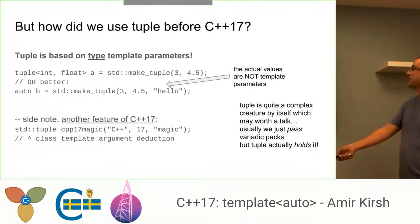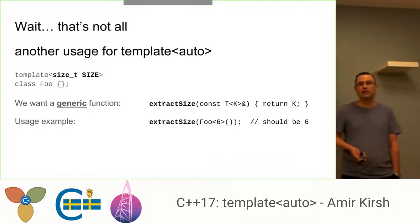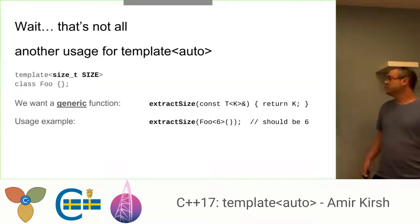Another usage for template auto is the following. Suppose that we have a class and the class has a non-type parameter. For example, Foo in this example has a size. And suppose that Foo doesn't hold the size in a static variable or in another way, and we want to extract the size with Foo. So we want something like a generic function extractSize that will take a type T because it doesn't have to be Foo. It can be anything. And then we want to extract the actual size of T.